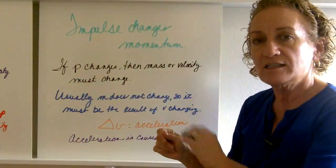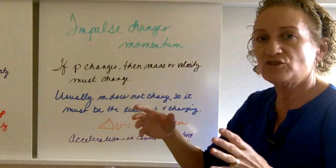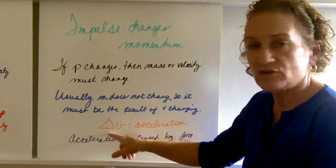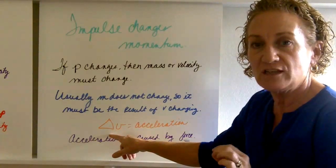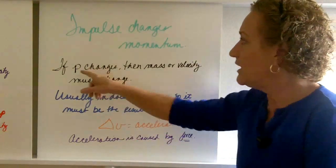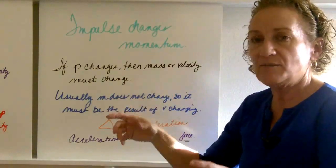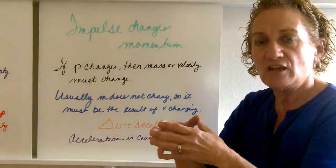Impulse is a cousin of momentum. Impulse is a change in momentum. It measures how much momentum changes. I just want to call your attention to the little triangle, which means change. That's the Greek letter delta, and it means change in something. So if momentum changes, then the mass or the velocity must have changed.